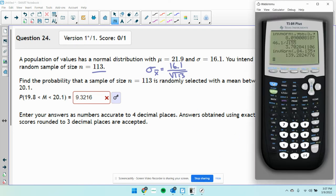I will do distributions. Now I'm looking for the area, so normal CDF. My lower bound is 19.8, my upper bound is 20.1. Mean is 21.9. And now I can do it all in one step: 16.1 divided by the square root of 113.